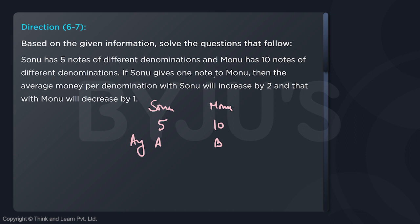Sonu gives 1 note to Monu, then the average money per denomination with Sonu will increase by 2. If Sonu gives a note to Monu, of course Monu will now have 11 notes and Sonu will now have 4 notes. The average of Sonu increases by 2 and the average of Monu decreases by 1.